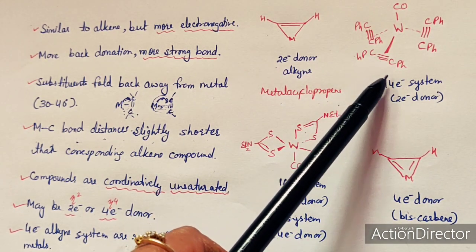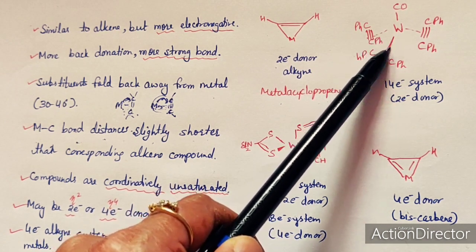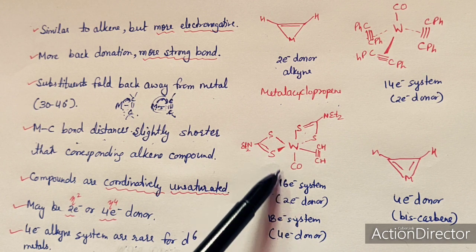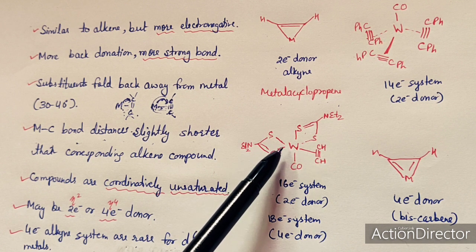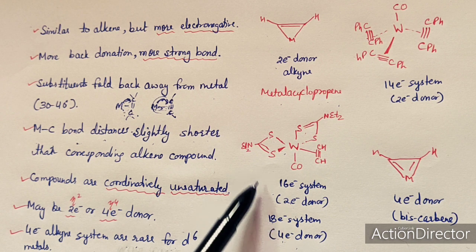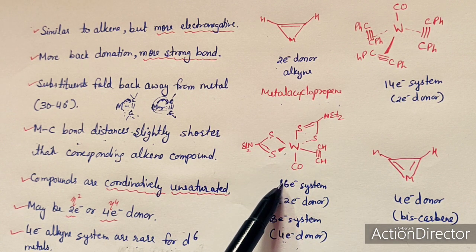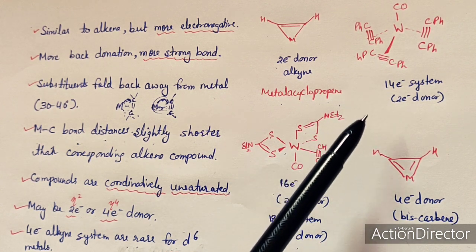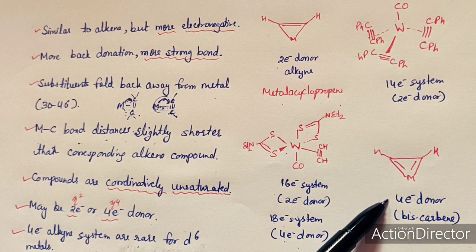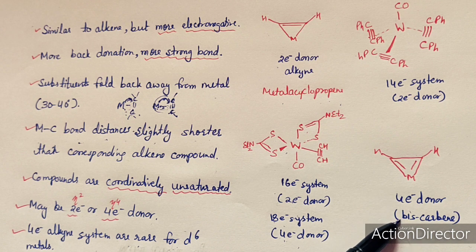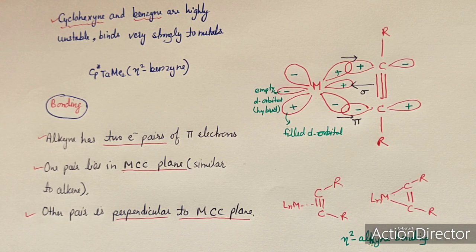Another complex shows a 16-electron system when the alkyne is considered a two-electron donor ligand — a coordinatively unsaturated system. If counted as a four-electron donor, it would become an 18-electron system, but experimentally it is a 16-electron system. So alkyne ligands generally form coordinatively unsaturated systems such as 16-electron or 14-electron systems. An extreme case is the biscarbine compound, where the alkyne functions as a four-electron donor.